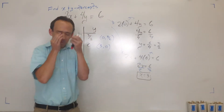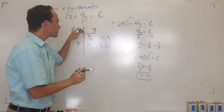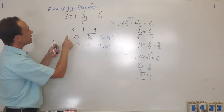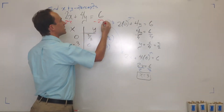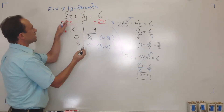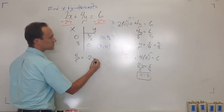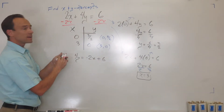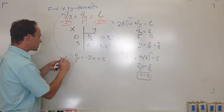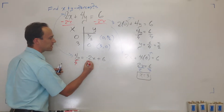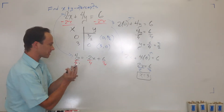Now I'm going to solve this equation for y to get a little more conceptual. I'm going to move the x term over, and I get 4y equals negative 2x plus 6. You see how I did that? Now I want to divide everything by 4.